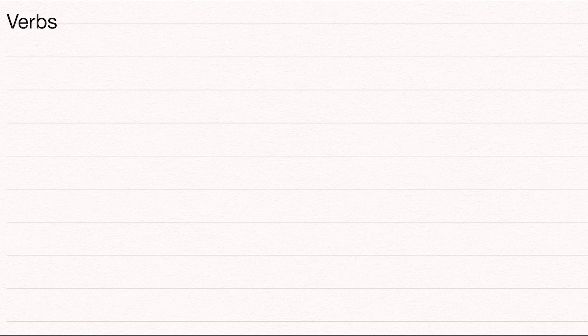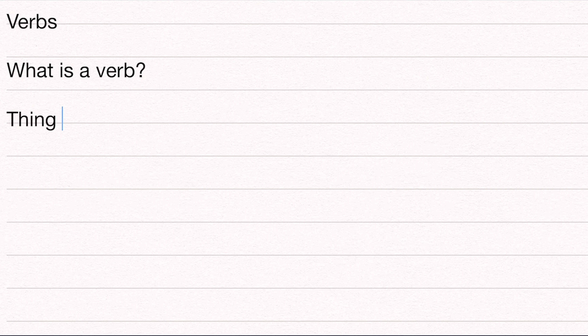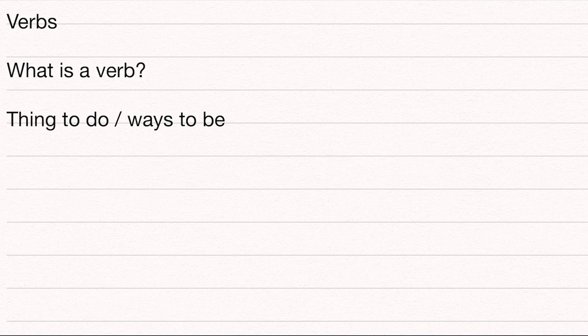So what is a verb? Well, the easy answer is that it's a thing that you can do. But that's not really a very good answer, because verbs are often not things that you do — things to do — and sort of like ways to be. Like, 'I feel tired.' That's not really a thing that I do. But for now, we're going to focus on things to do, and we'll get back to ways to be.